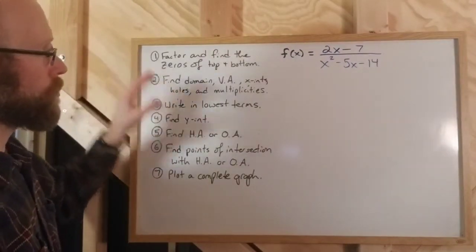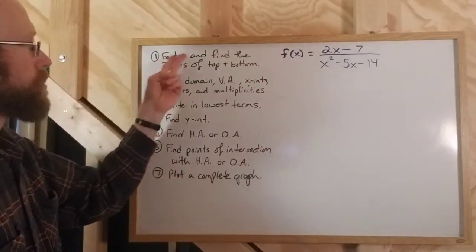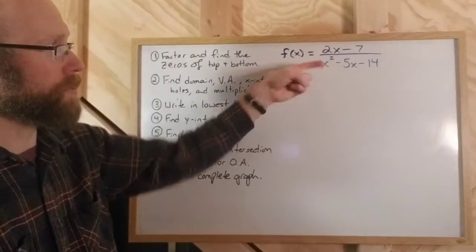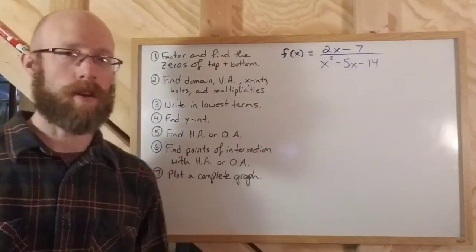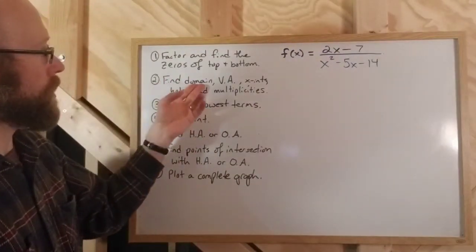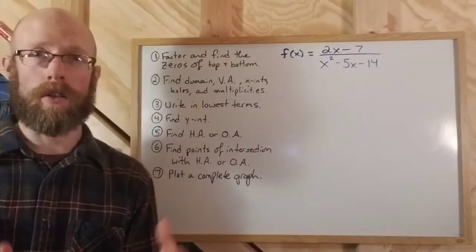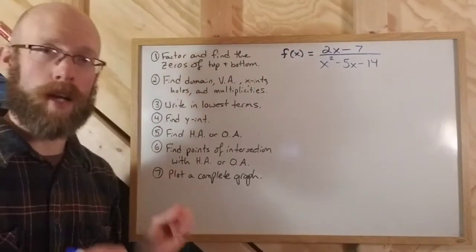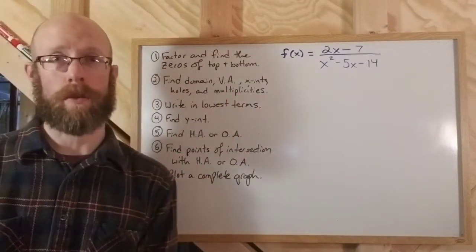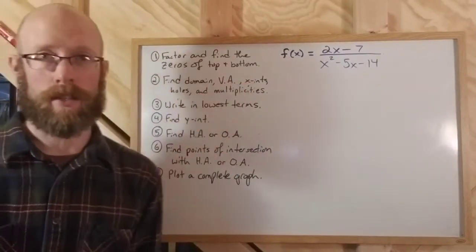So the first thing we're going to do — really when we analyze the graph of any rational function — is factor and find the zeros at the top and the bottom. You're going to factor the numerator, factor the denominator, and find all of the zeros resulting from those factors. The multiplicities are going to be important too, because that will tell you the behavior of the graph at the vertical asymptotes and x-intercepts.